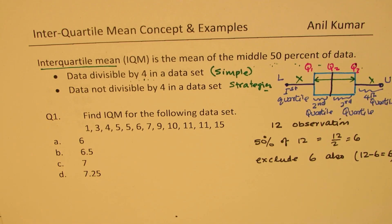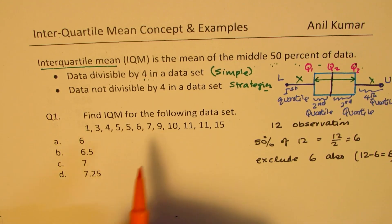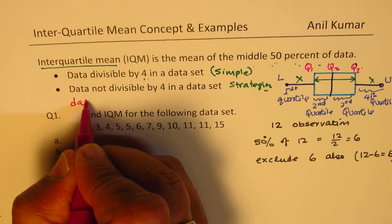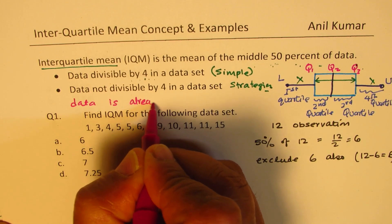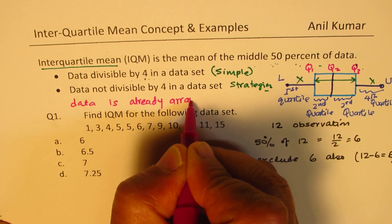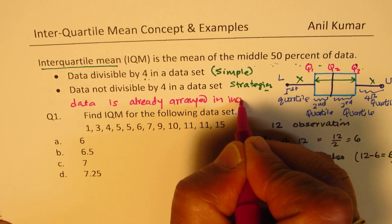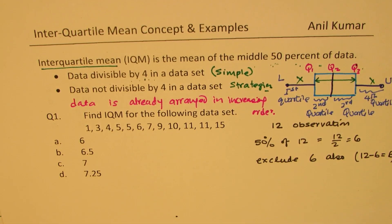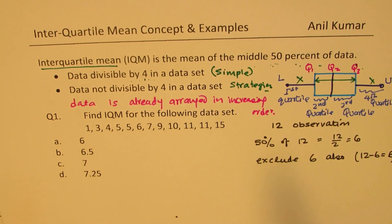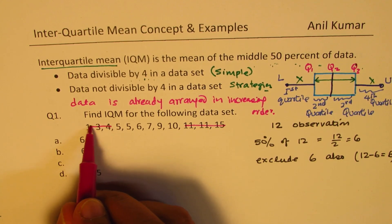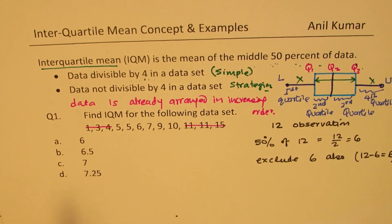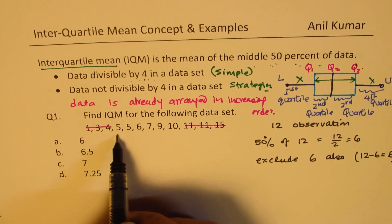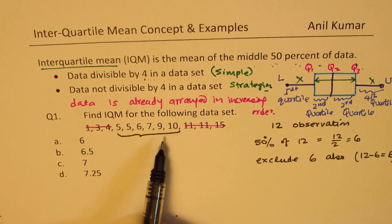Since this data is already arranged in increasing order, we don't need an extra sorting step — but sometimes that step is required. We are only interested in 50 percent, so we exclude three on the left side and three on the right side, leaving us with six observations. We then find the mean of what is available: those six items.